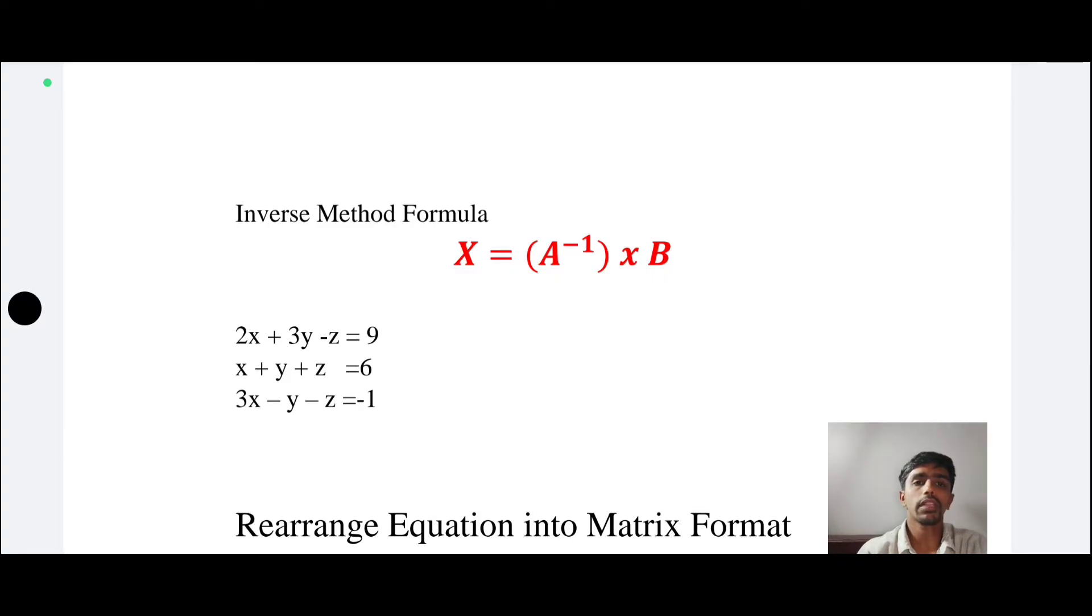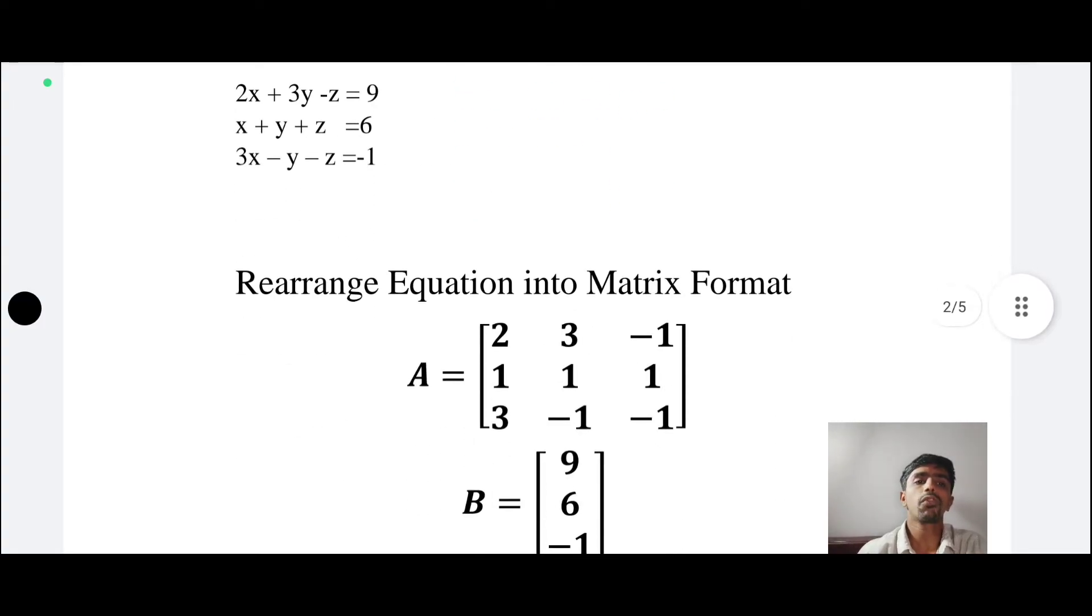2x plus 3y minus z equal to 9, x plus y plus z equal to 6, 3x minus y minus z equal to minus 1. We will tell you the matrix format.